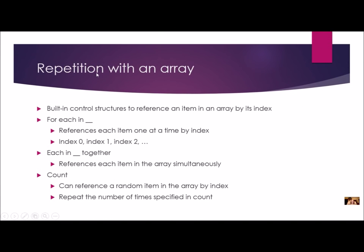When doing repetition with an array, there are built-in control structures that reference an item by its index. The two built-in ones are 'for each in' and 'for each in together'. 'For each in' references each item one at a time by index, in order — index zero, then index one, then index two. That's why it's important that you put items in the order you want. 'Each in together' references each item simultaneously, like a 'do together'. We can also use the count loop to reference a random item by index.